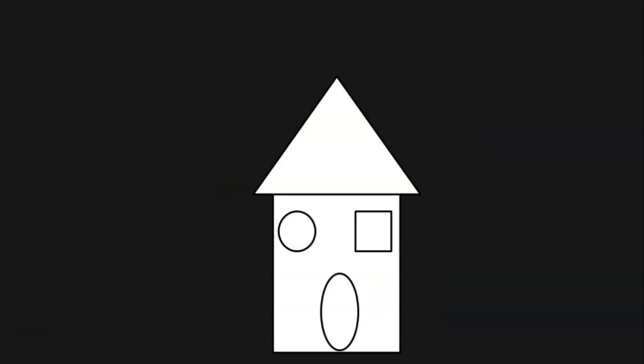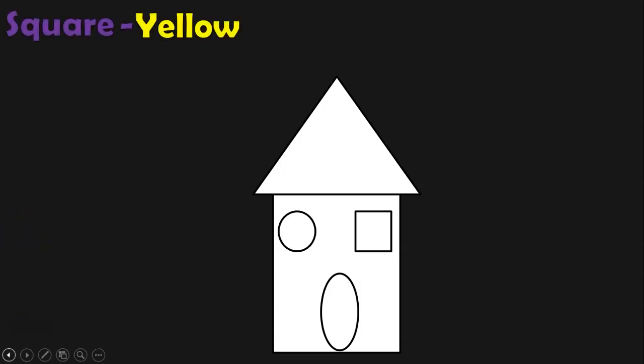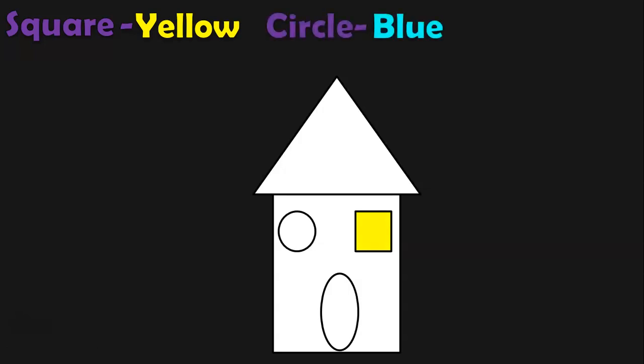We see the picture of a house made up of different shapes. Read the instructions carefully and do the coloring accordingly. First, identify the square and color it in yellow color. Here the square is present and you have to color it in yellow color. Next, the circle should be colored in blue. Identify the shape circle and color it with blue.